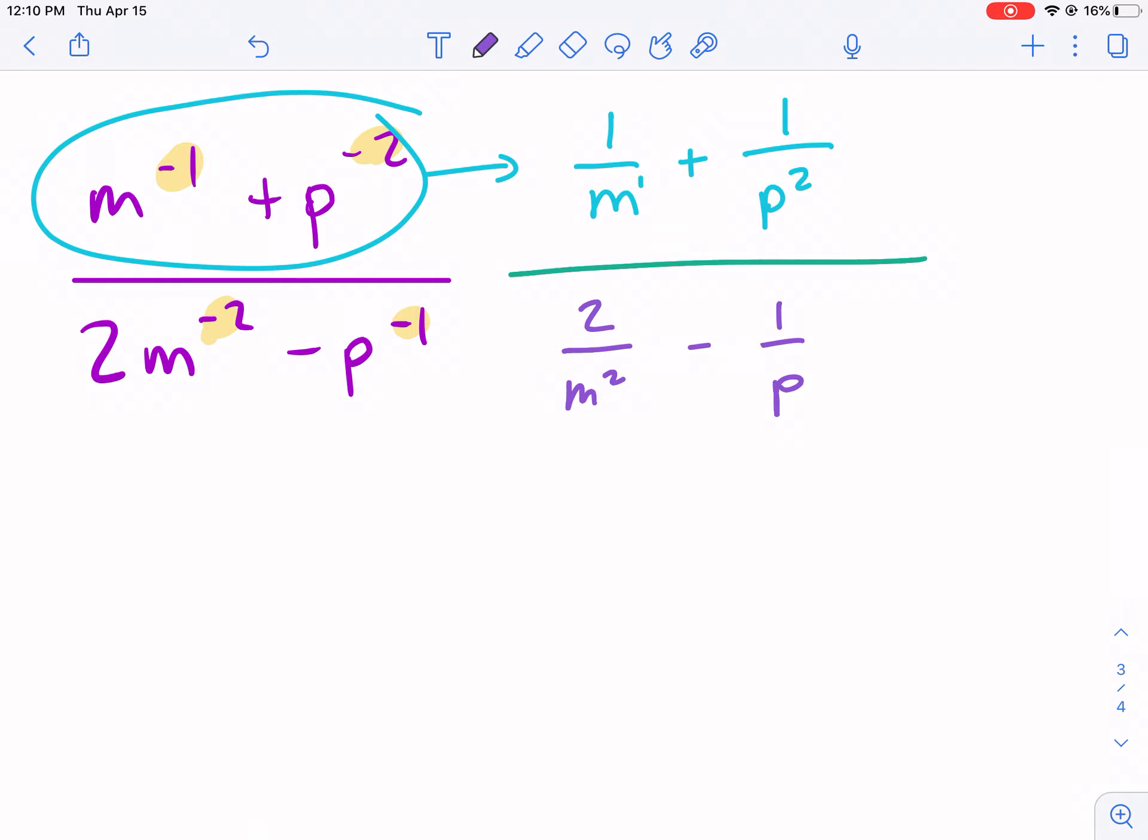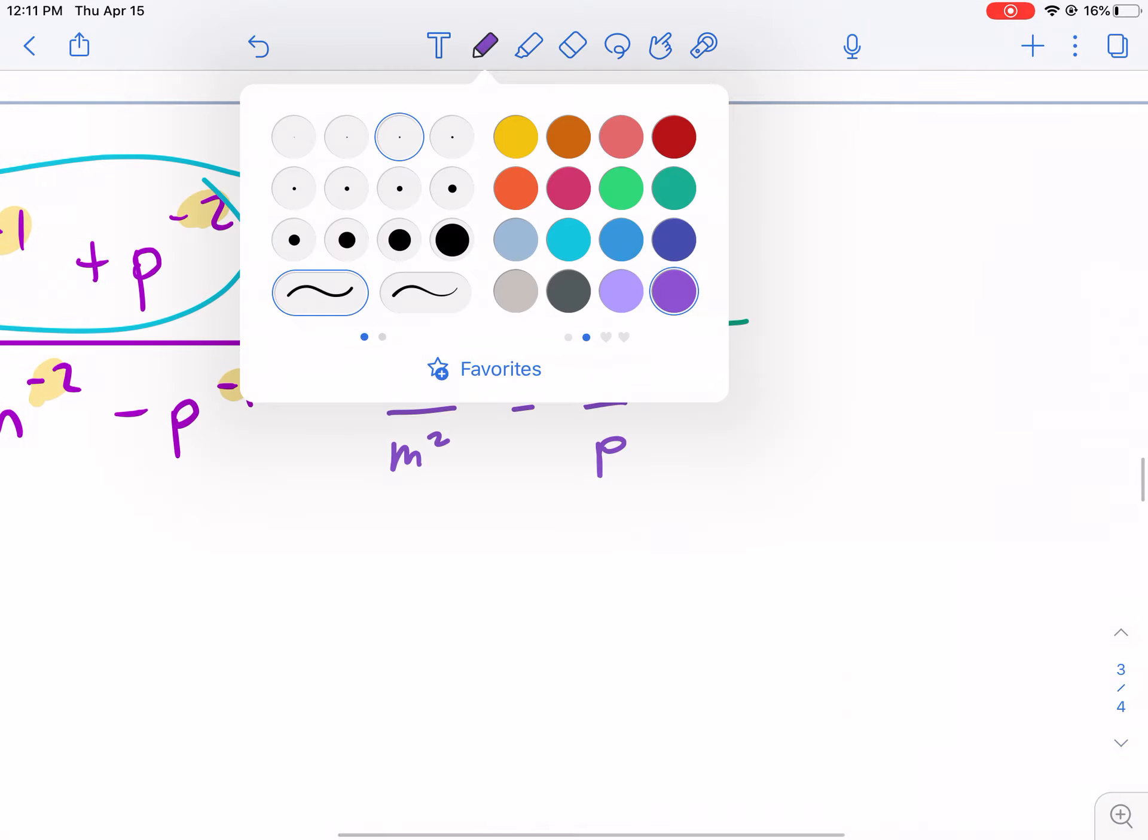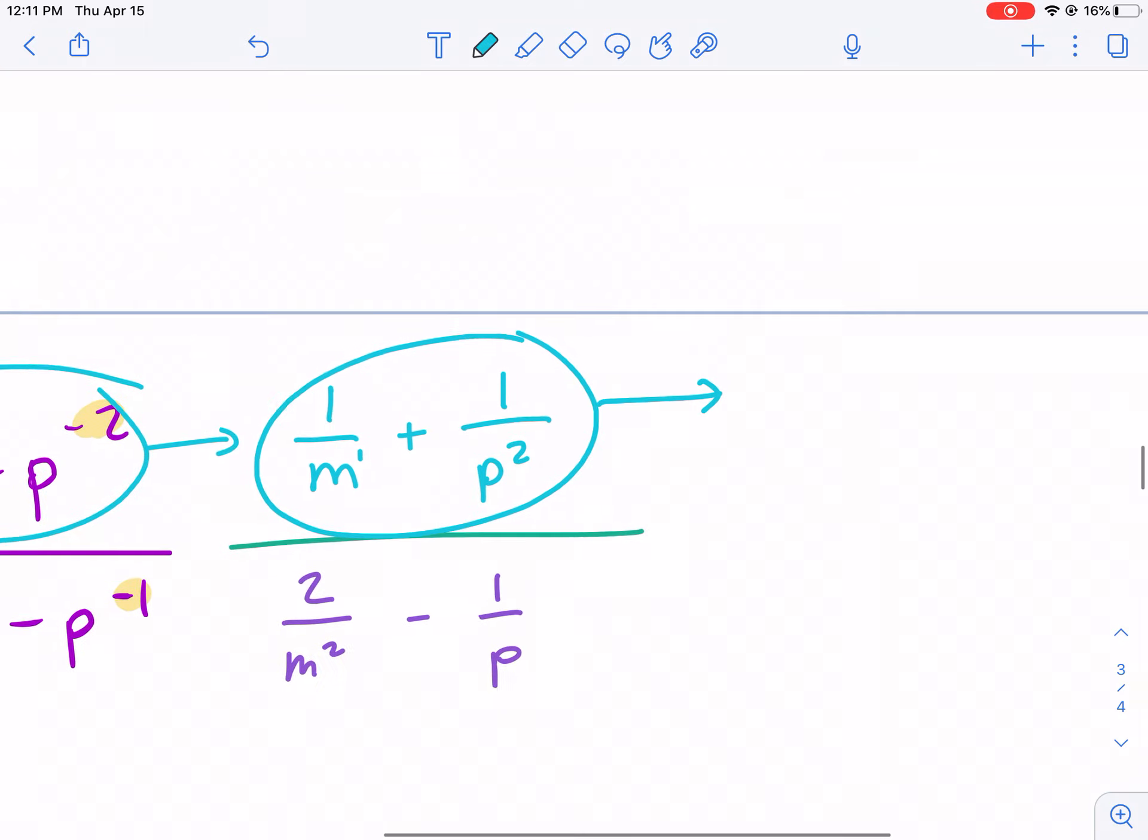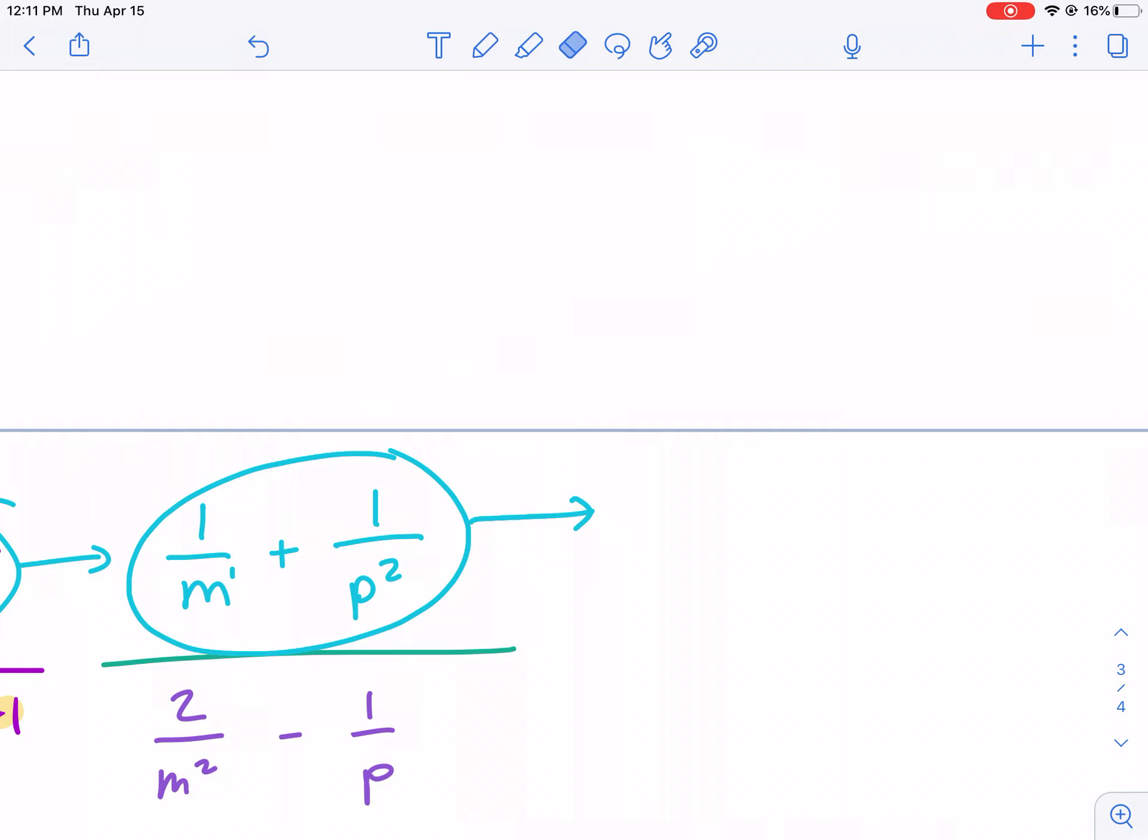Now, what do we do from here? Well, we need to simplify the top and bottom independently so that it's all one fraction. So I'm going to take this guy, and I'm going to simplify him first. And actually, I'm going to use this space up here.